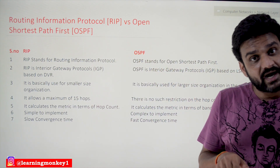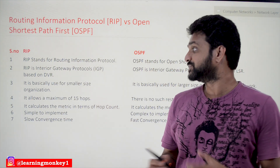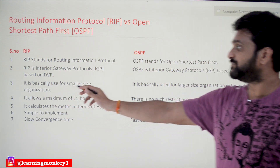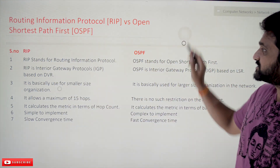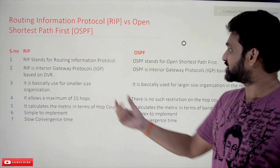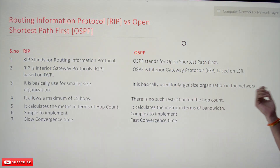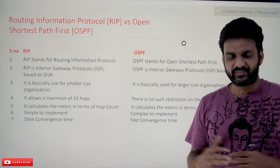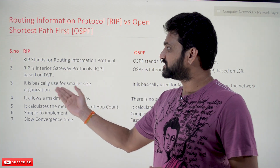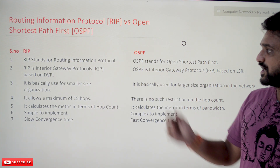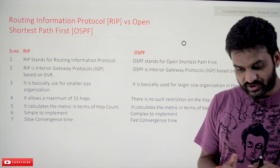RIP is basically used for smaller-size networks and smaller organizations, whereas OSPF is basically used for large-size organizations. So bigger organizations use OSPF and smaller organizations can use RIP.